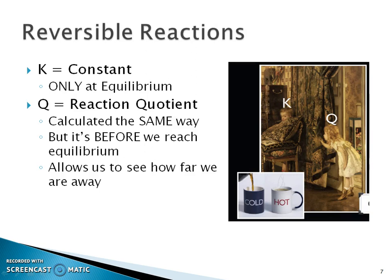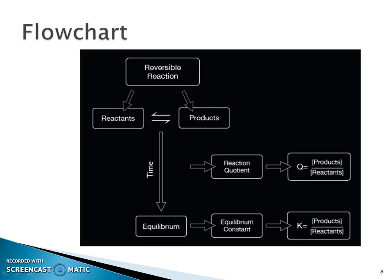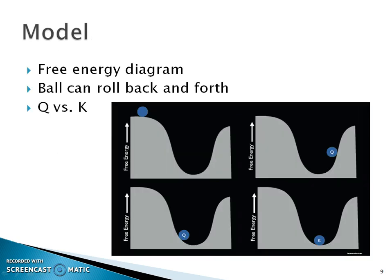Those are the concentrations at equilibrium. The reaction quotient is calculated exactly the same way, but it uses the initial concentrations of those reactants. He gave you that nice flow chart as he always does.